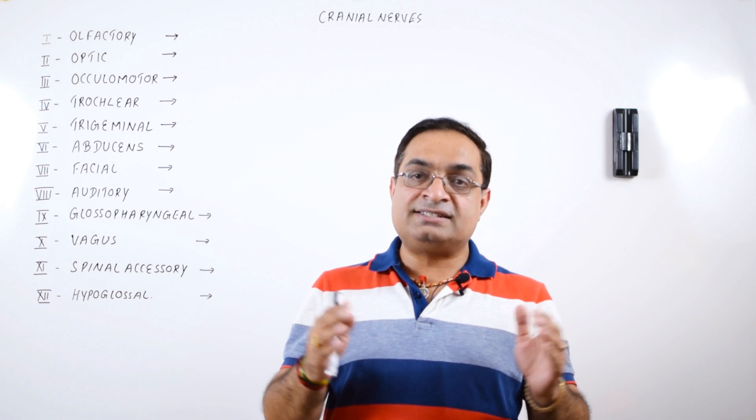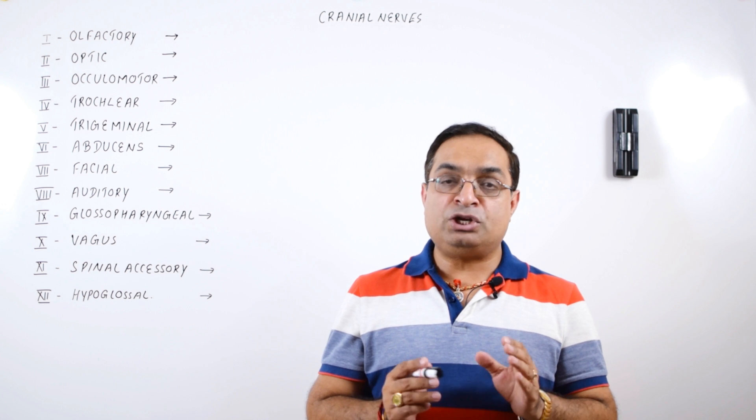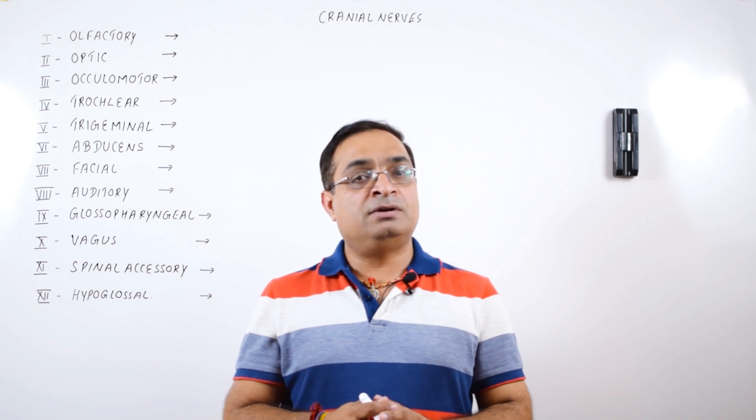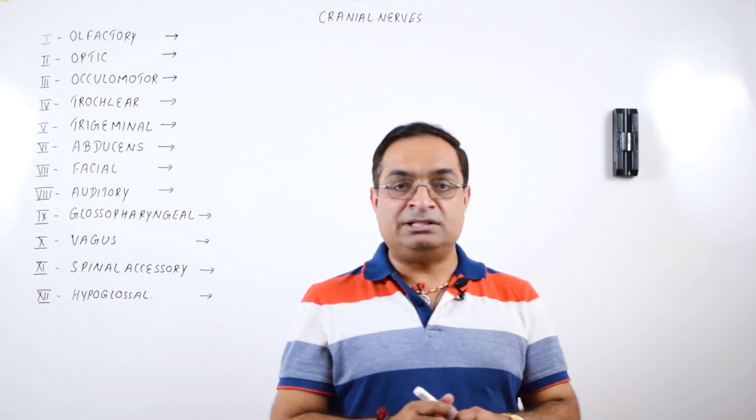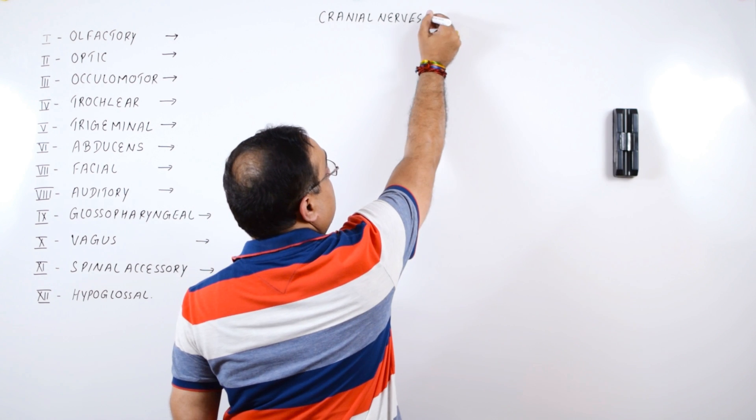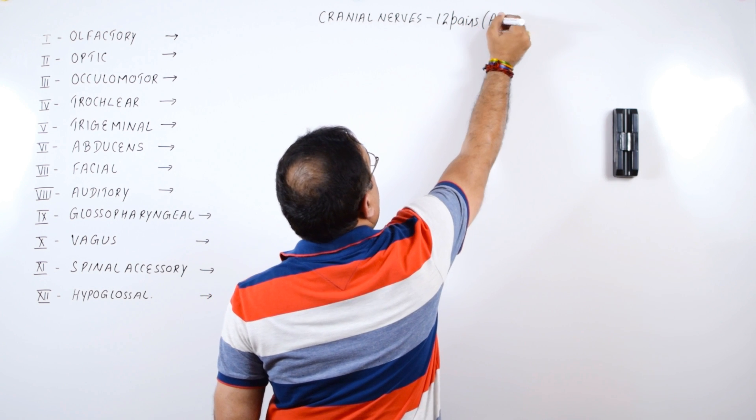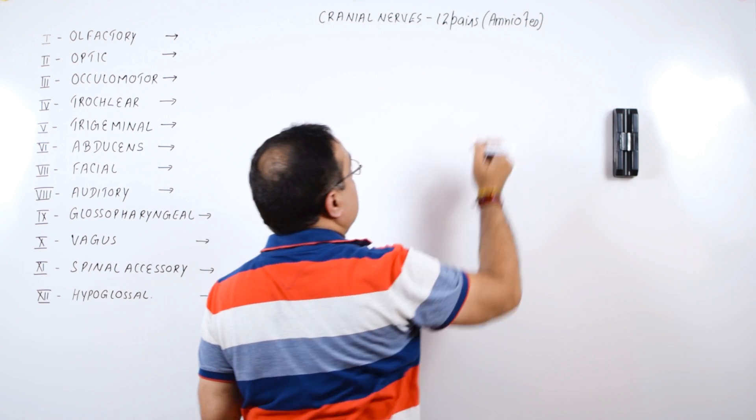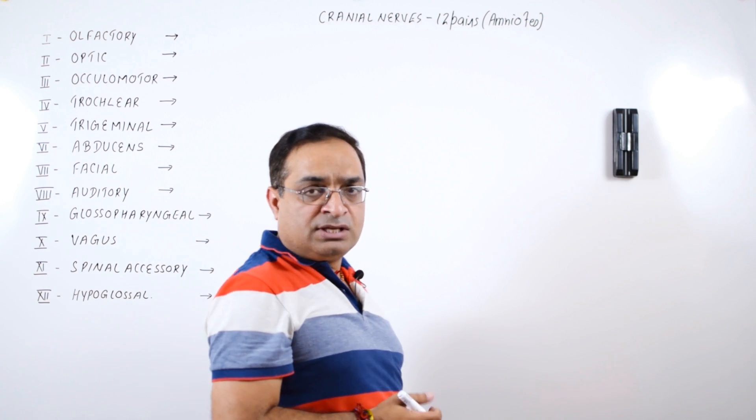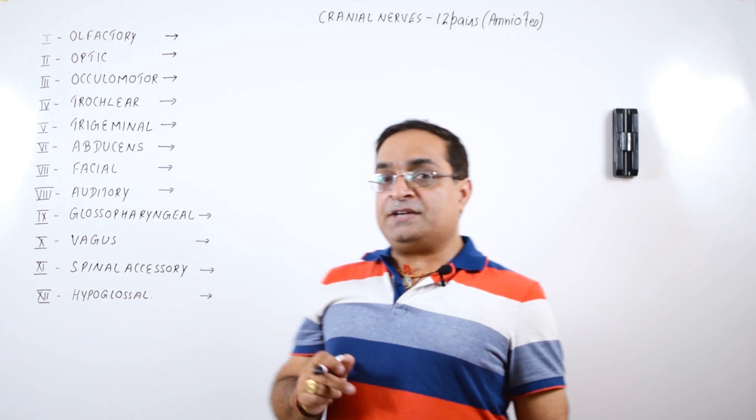In case of amniotes, amniotes are the animals which have amniotic membrane that is reptiles, birds and mammals, the number of cranial nerves is 12 pairs. In case of anamniotes, that is fish and amphibians, the number of cranial nerves is 10 pairs.